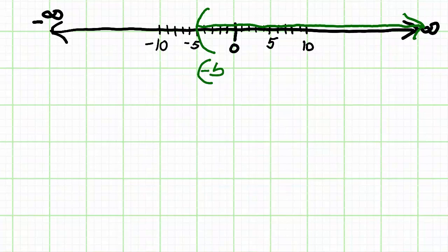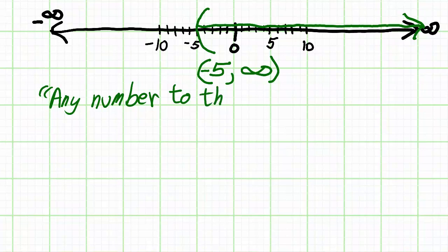Okay, well, negative 5 is where the numbers start, and then they go forever to the right, so that would be the matching interval notation. And what both the graph and the interval notation say is any number to the right of negative 5.